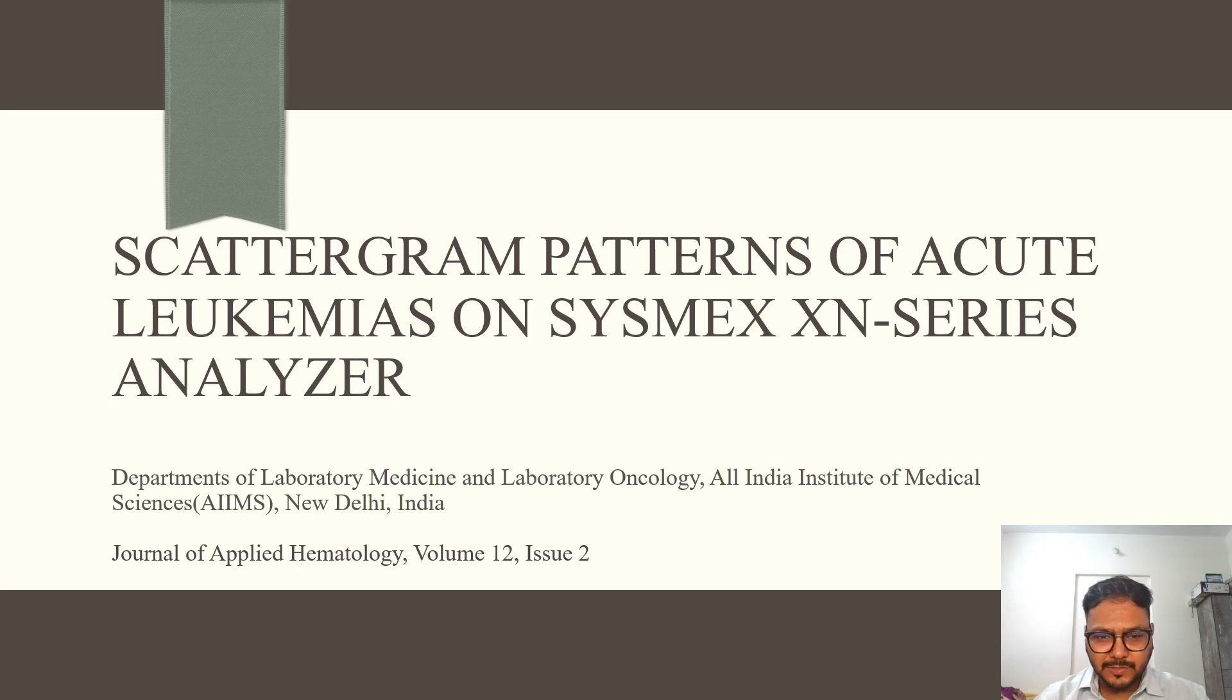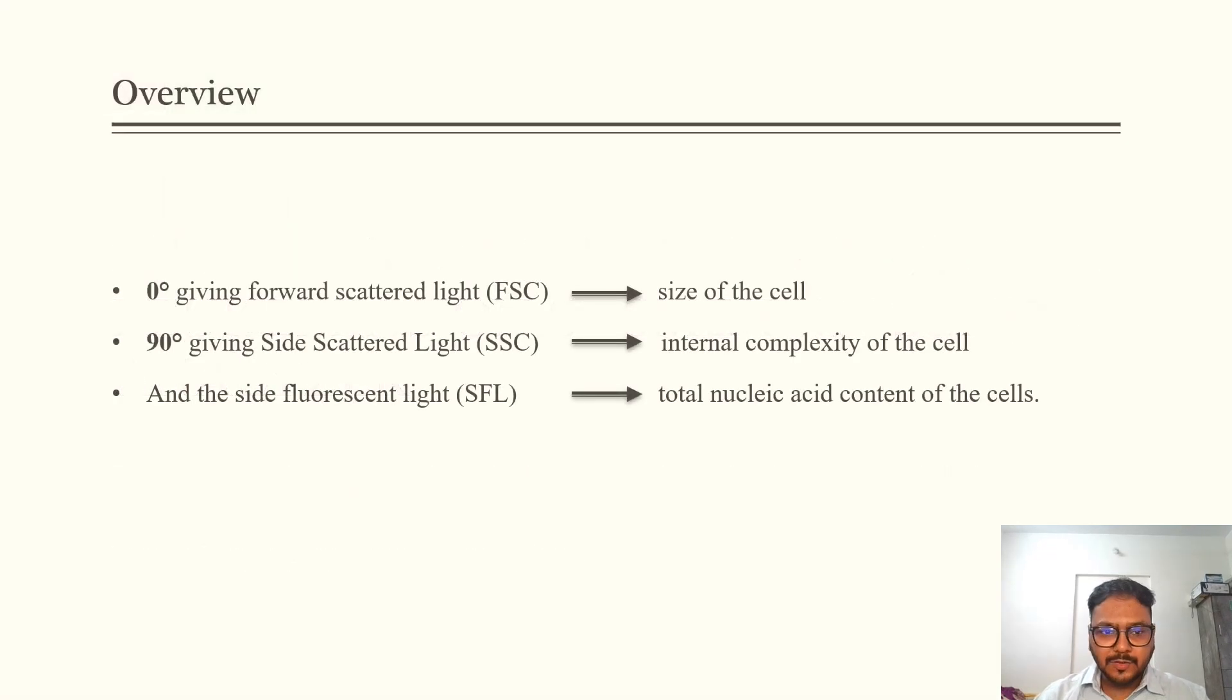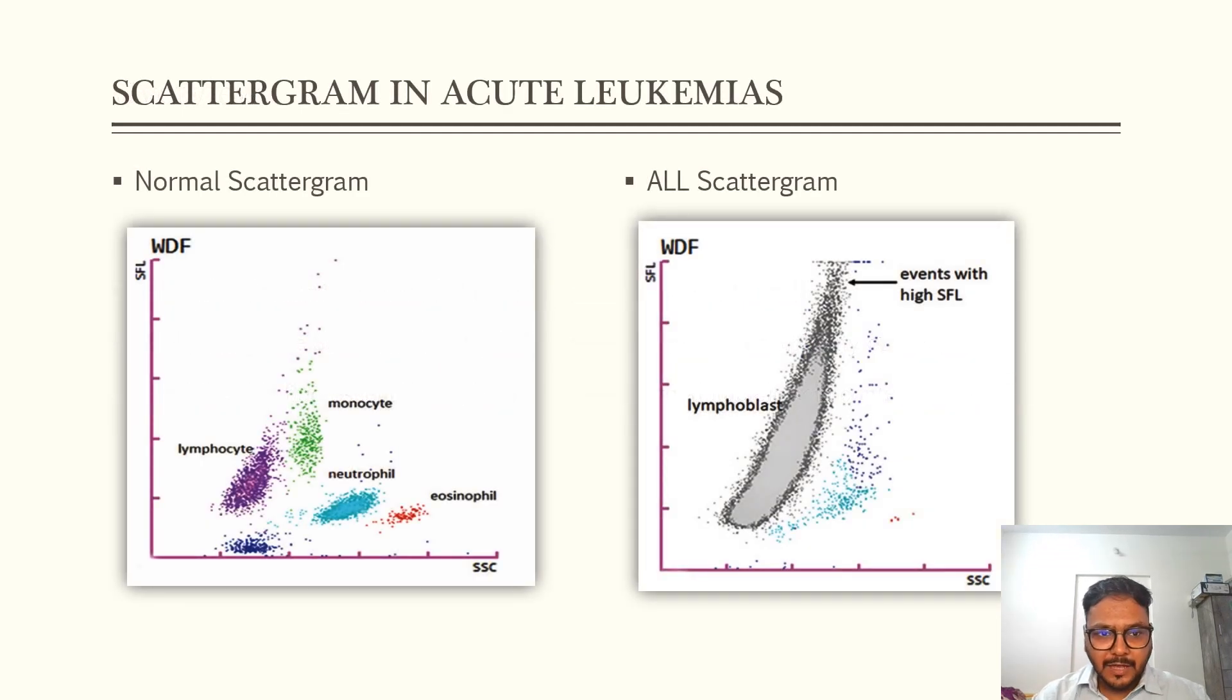The main topic for today, scattergram patterns of acute leukemias which is seen on Sysmex XN series analyzer. This is a study which was carried out by AIIMS New Delhi India and published in Journal of Applied Hematology. So to begin with this study we all know forward scatter depends on the size or the volume of the cell. Side scatter depends upon the internal complexity of the cell. Now what is side fluorescence light? It depends on the total nucleic acid content of the cell, the more the nuclear material, more the bigger the chromatin, higher will be the fluorescence emitted by that cell. With these three points or these three basic knowledge we'll see the pattern seen in various acute leukemias. I'll keep this normal scattergram towards the left for the reference and all the patterns which we are seeing in various scattergrams will be seen on the right.